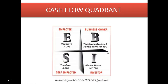The third quadrant is the business owner quadrant, where you own a system and people work for you. That's the major difference between the self-employed and the business owner — in one, you're working for yourself; in the other, people are working for you. And then lastly is the investor quadrant, where money works for you. You literally sleep and wake up and there's more money — people that have invested in shares, get dividends, or are on the board of an organization.